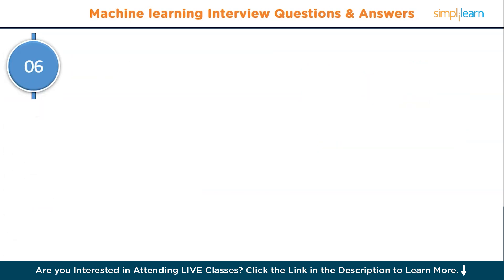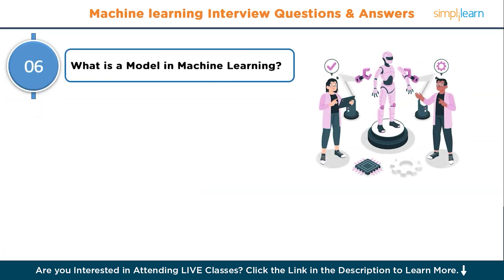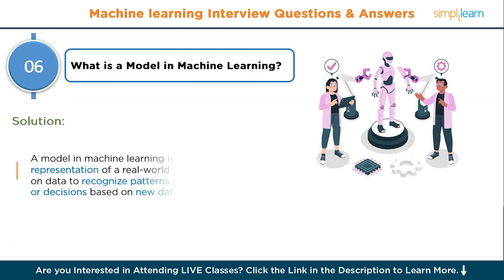Moving to question number six: what is a model in machine learning? A model in machine learning is a mathematical representation of a real-world process. It is trained on data to recognize patterns and make predictions or decisions based on new data.